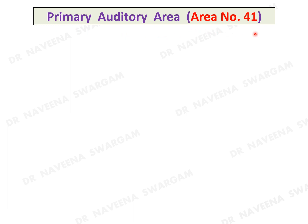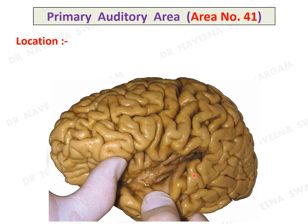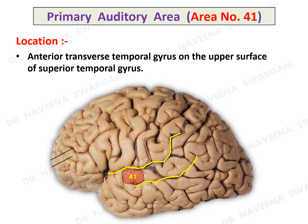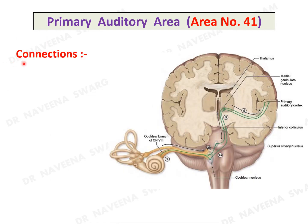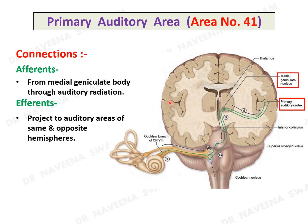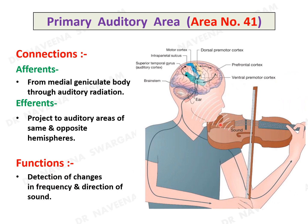Primary auditory area, area 41: here is the posterior ramus of the lateral sulcus, the superior temporal sulcus, and the superior temporal gyrus. The upper surface of this gyrus shows transverse temporal gyri extending into the walls of the posterior ramus of the lateral sulcus. The primary auditory area occupies the most anterior transverse temporal gyrus, which also extends onto the lateral surface of the superior temporal gyrus. It receives afferents from the medial geniculate body through auditory radiation, and projects to auditory areas of the same and opposite hemispheres. It detects changes in frequency and direction of sound.